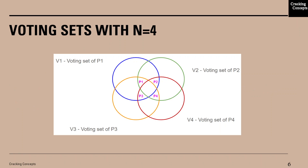Now let us look into an example where we have voting sets with n equal to 4. We can see that these four sets are represented by four colors. V1 is the voting set for P1 denoted in green, V3 is the voting set for P3 denoted in orange, and V4 is the voting set of P4 denoted in red.